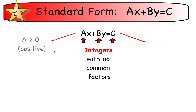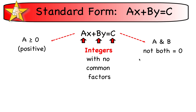Another restriction is that the first coefficient in front of the x variable has to be positive — a must be greater than or equal to 0. If a is 0 and there is no x term, then b cannot also be 0. We can't have both a and b equal to 0, or else we don't have a linear equation or a linear function.